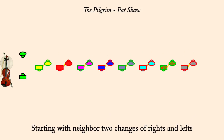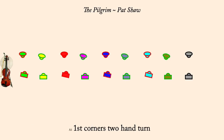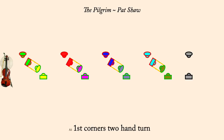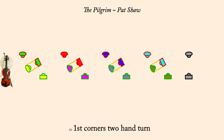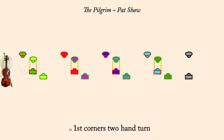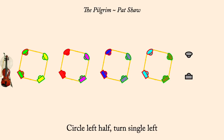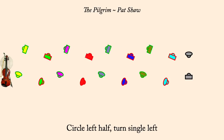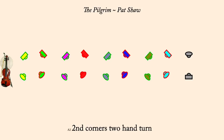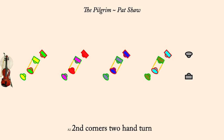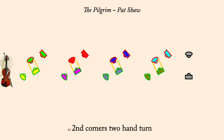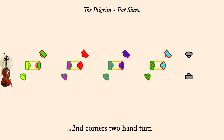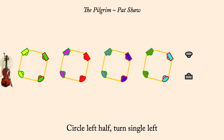First corners, two-hand turn. Circle left half, turn single left. Second corners, two-hand turn. Circle left half, turn single left.